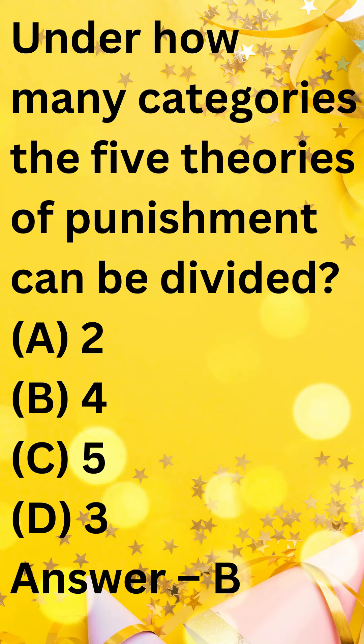Under how many categories can the 5 theories of punishment be divided? A. 2, B. 4, C. 5, D. 3. Answer: B.